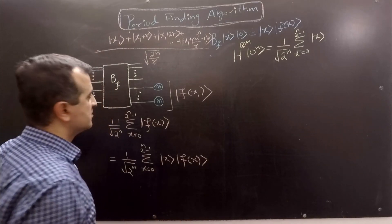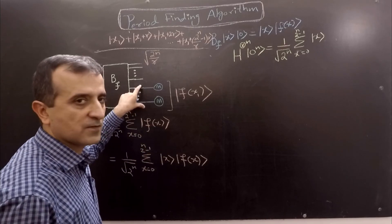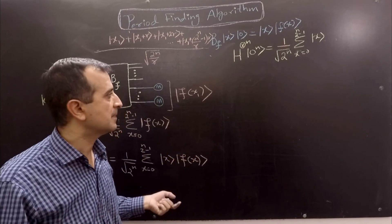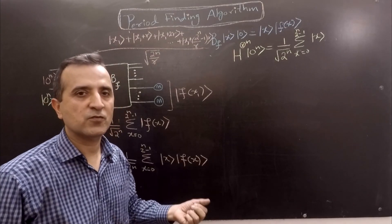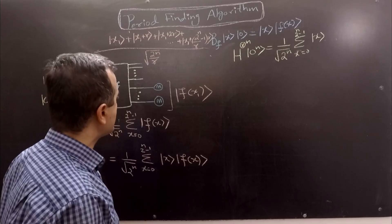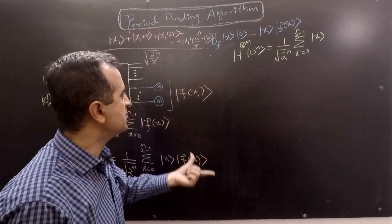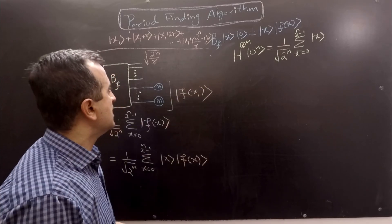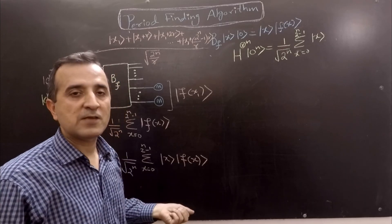Therefore we have to re-run the whole circuit. But when we re-run it, both registers are once again in superposition, and when we measure the second register we might not get f(x₁) again — we might get f(x₂), f(x₃), or some other value, giving the first register a different superposition. If we then measure the first register we can potentially get any value of x. So we cannot achieve any speedup using this method.